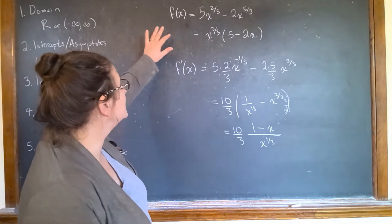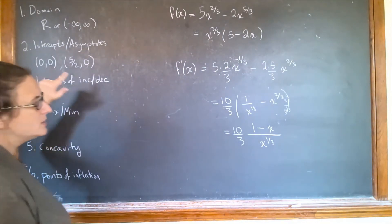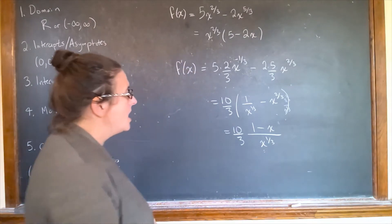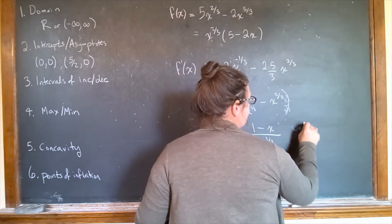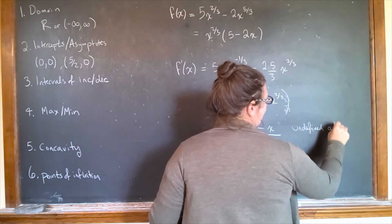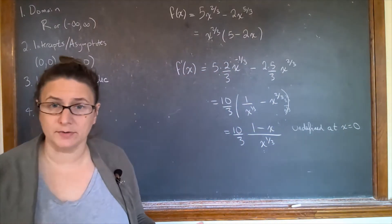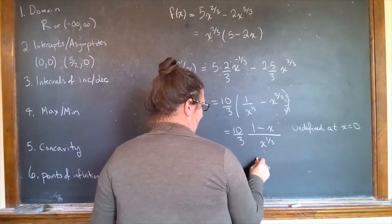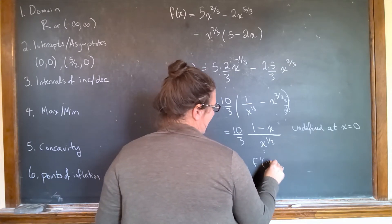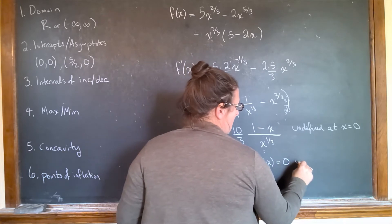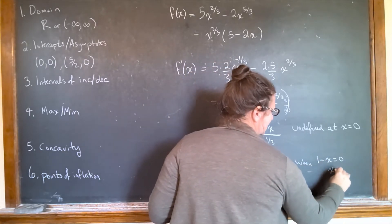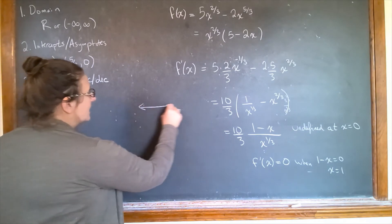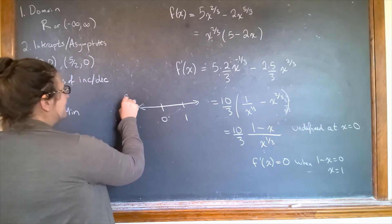Notice that the original function is defined at x = 0 — it goes through (0, 0) — but the derivative is not defined at x = 0 because x^(1/3) is in the denominator. So x = 0 is a critical point where the derivative is undefined. The derivative equals zero when 1 - x = 0, so x = 1 is also a critical point.